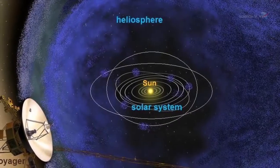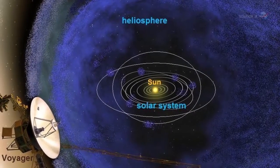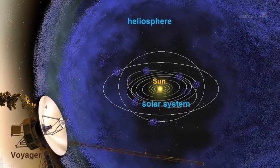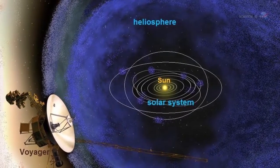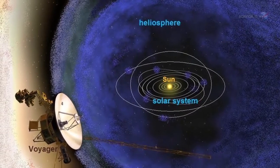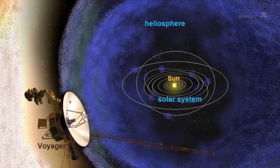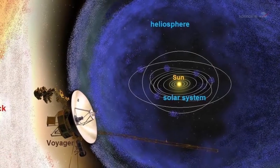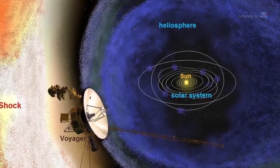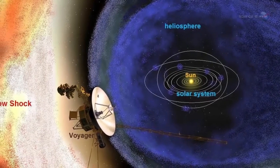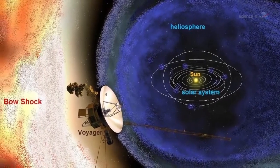A reversal of the Sun's magnetic field is, literally, a big event. The domain of the Sun's magnetic influence, also known as the heliosphere, extends billions of kilometers beyond Pluto. Changes to the field's polarity ripple all the way out to the Voyager probes, on the doorstep of interstellar space.